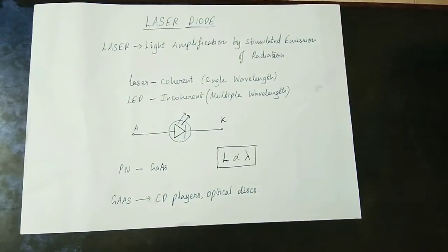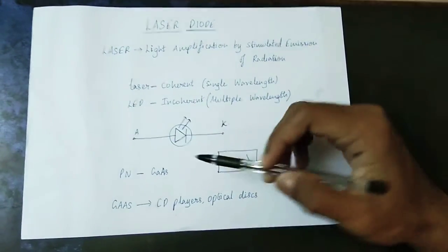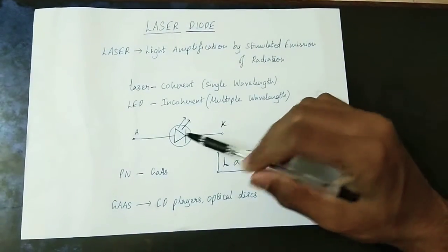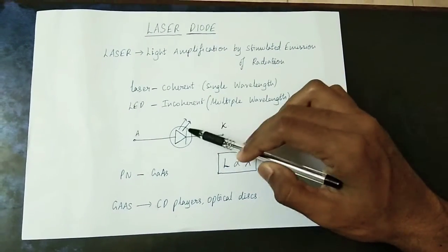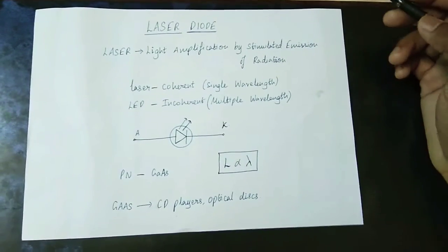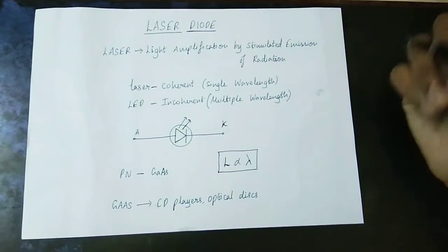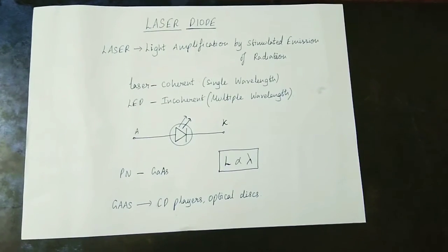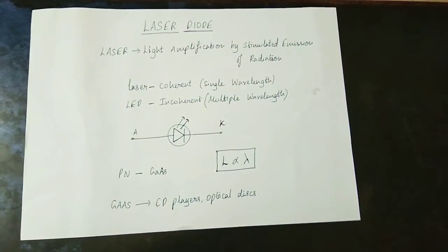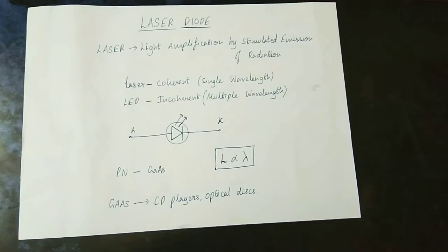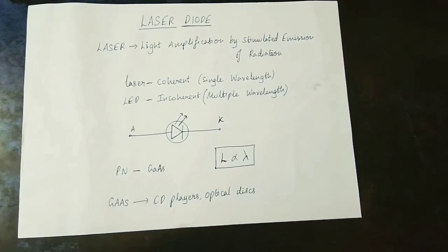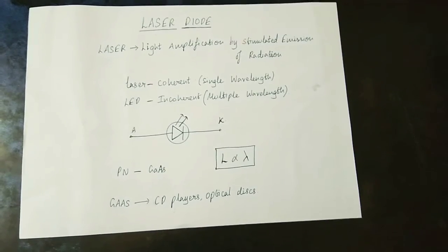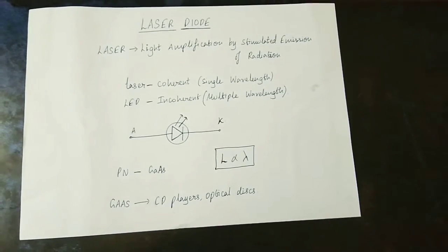The laser diode has a simple symbol. If you look at the LED symbol, the laser diode symbol is similar. The material used is gallium arsenide (GaAs). It is a PN junction diode operated under forward bias. Both LED and laser diode use a PN junction, but they differ in their output light.